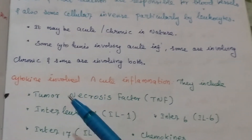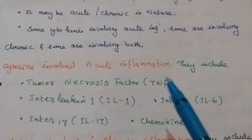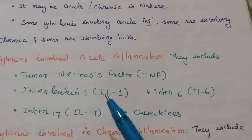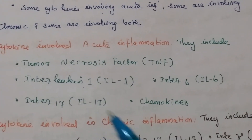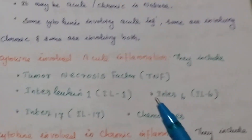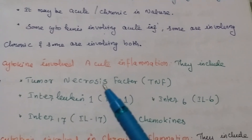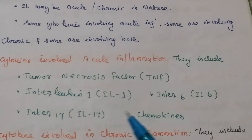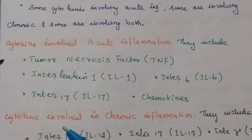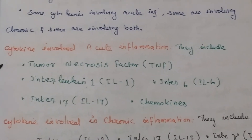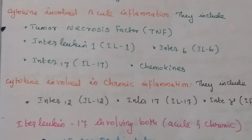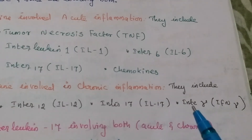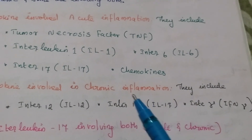Cytokines involved in acute inflammation include tumor necrosis factor, interleukin-1, interleukin-6, interleukin-17, and chemokines. Cytokines involved in chronic inflammation include interleukin-12, interleukin-17, and interferon. Interleukin-17 is an example of a cytokine involved in both acute and chronic inflammation.